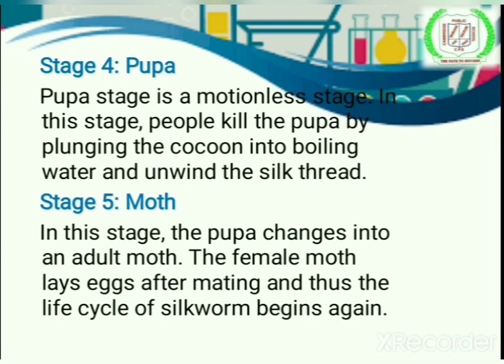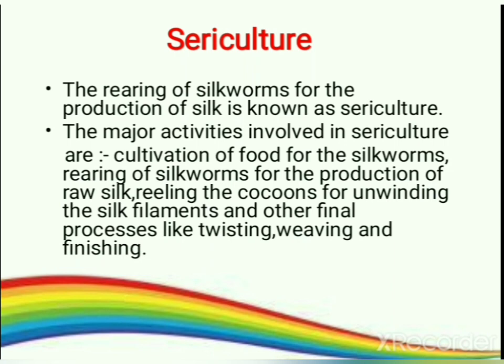Sericulture — the rearing of silkworms for the production of silk is known as sericulture. The major activities involved in sericulture are cultivation of food for the silkworms, rearing of silkworms for the production of raw silk, reeling the cocoons for unwinding the silk filaments, and other final processes like twisting, weaving, and finishing.